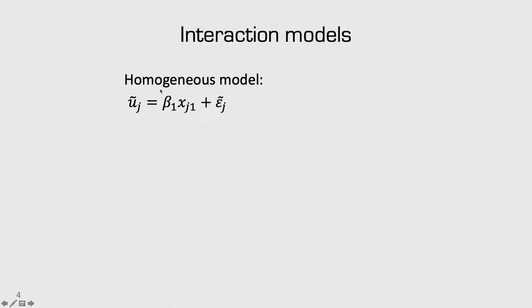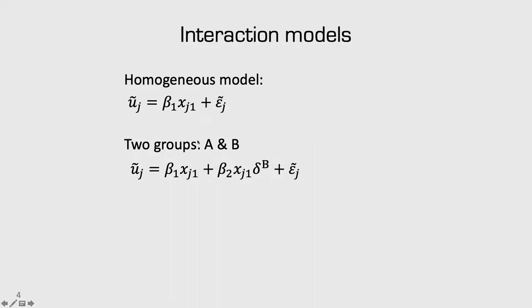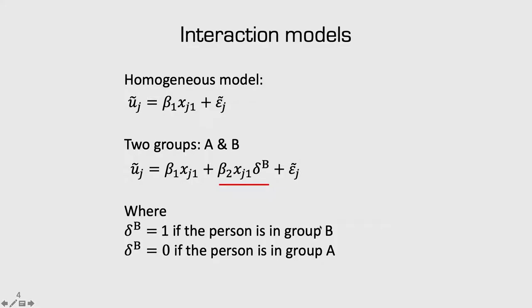Let's start with interaction models. Say we have a simple homogeneous model with one coefficient beta 1 and one attribute x1. If we had two different groups — group A and group B — one way we could separate out the effect from x1 is to add an interaction term: beta 2 times x1, multiplied by a dummy coefficient delta, which takes a value of 1 if the person is in group B and 0 otherwise. The addition of this term allows us to separate out the difference between the effects of x1 for group A and group B.